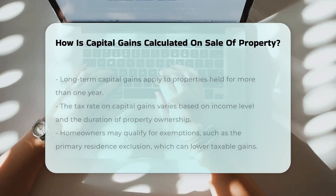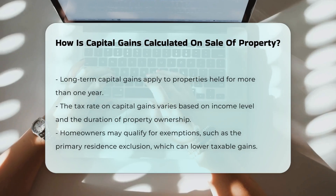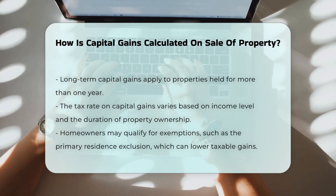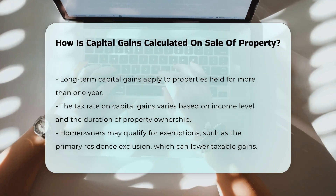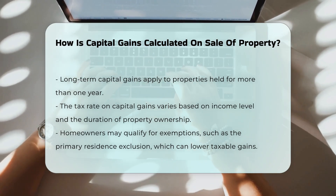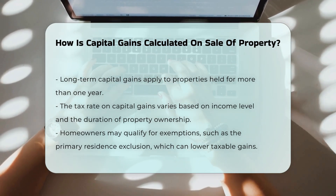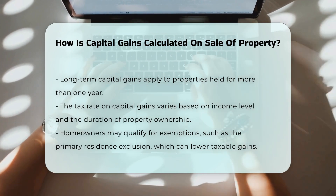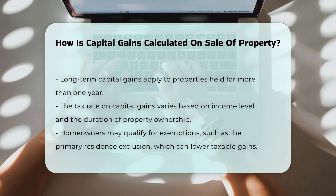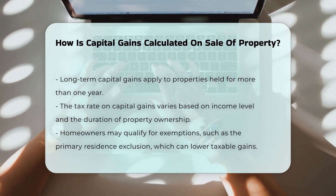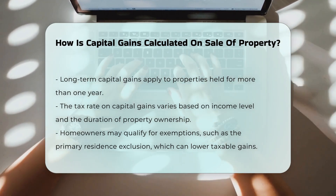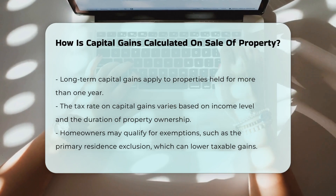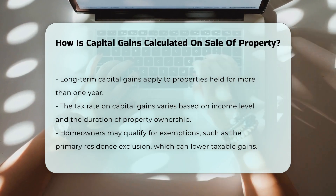The tax rate on capital gains may vary based on your income level and the duration of property ownership. Understanding exemptions is also crucial. For instance, homeowners may qualify for the primary residence exclusion, which can significantly reduce taxable gains.